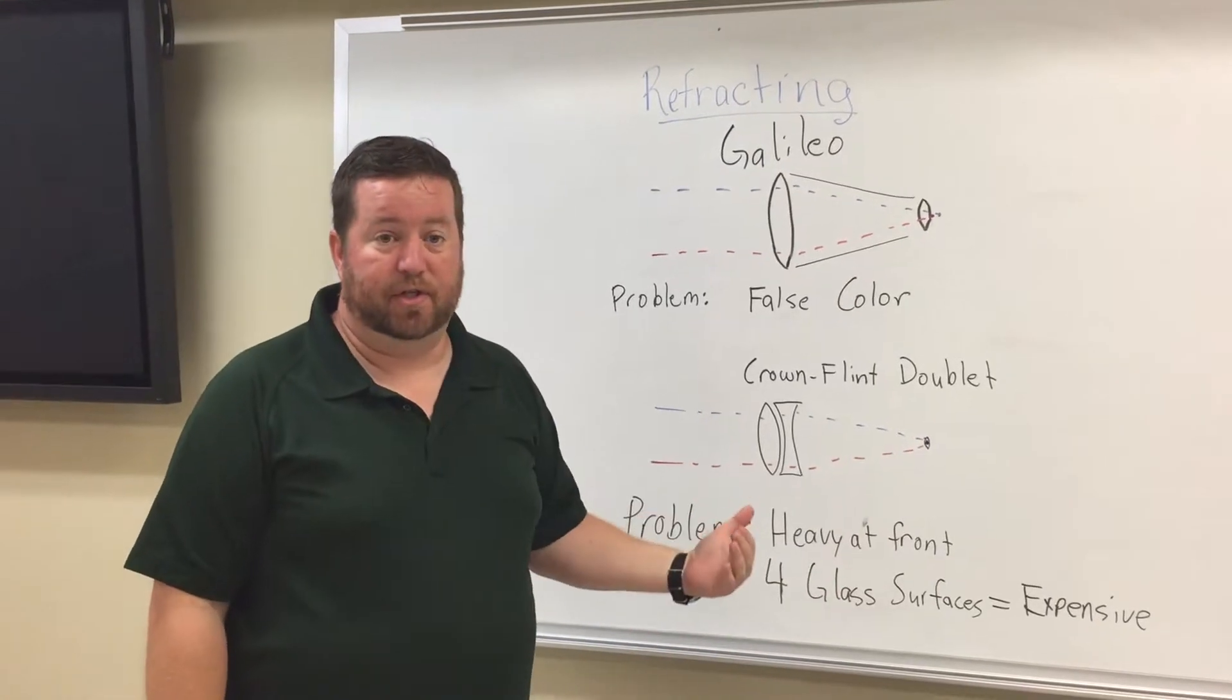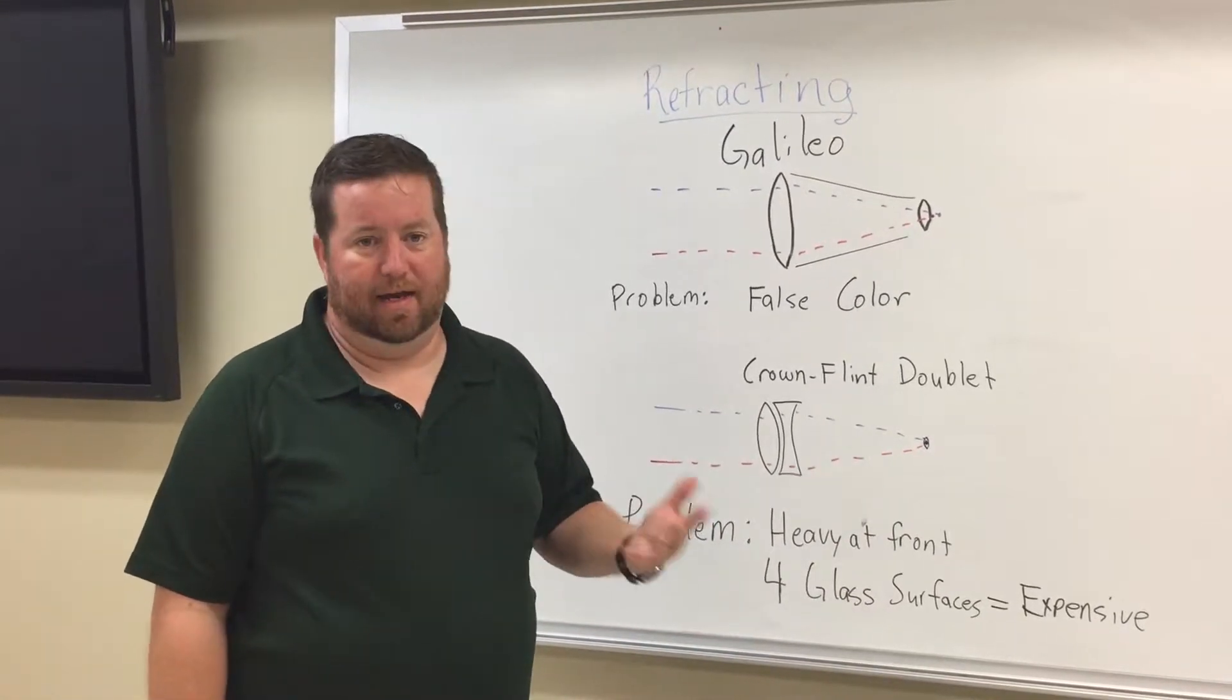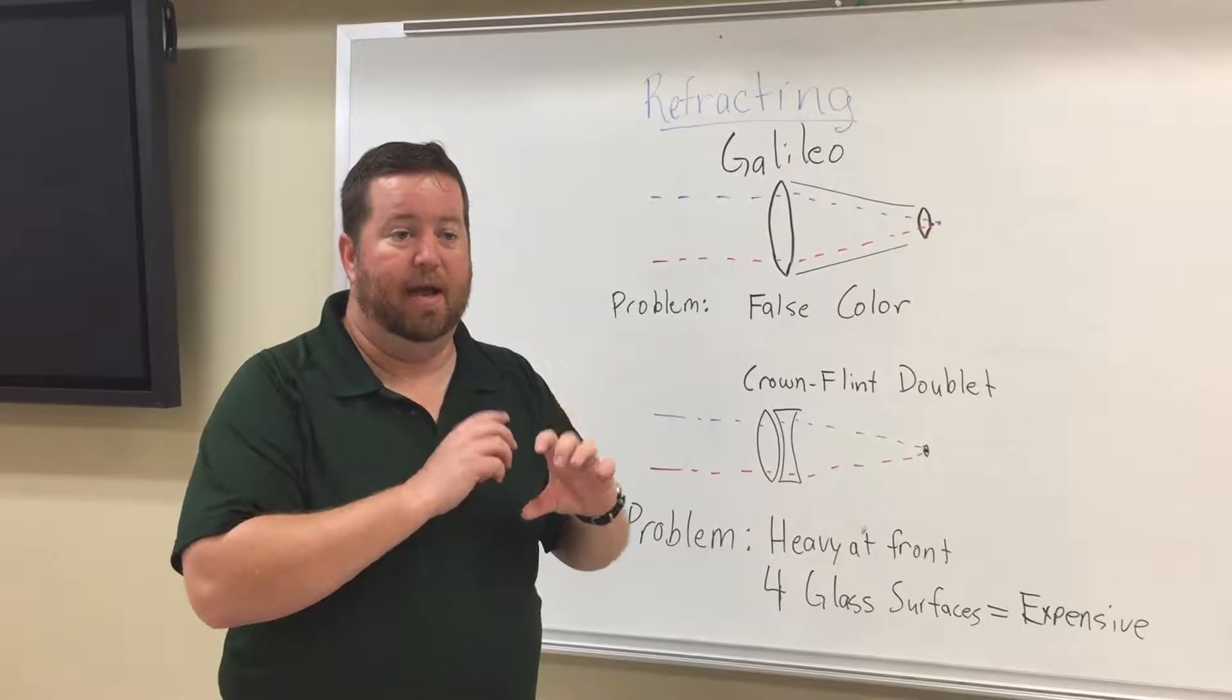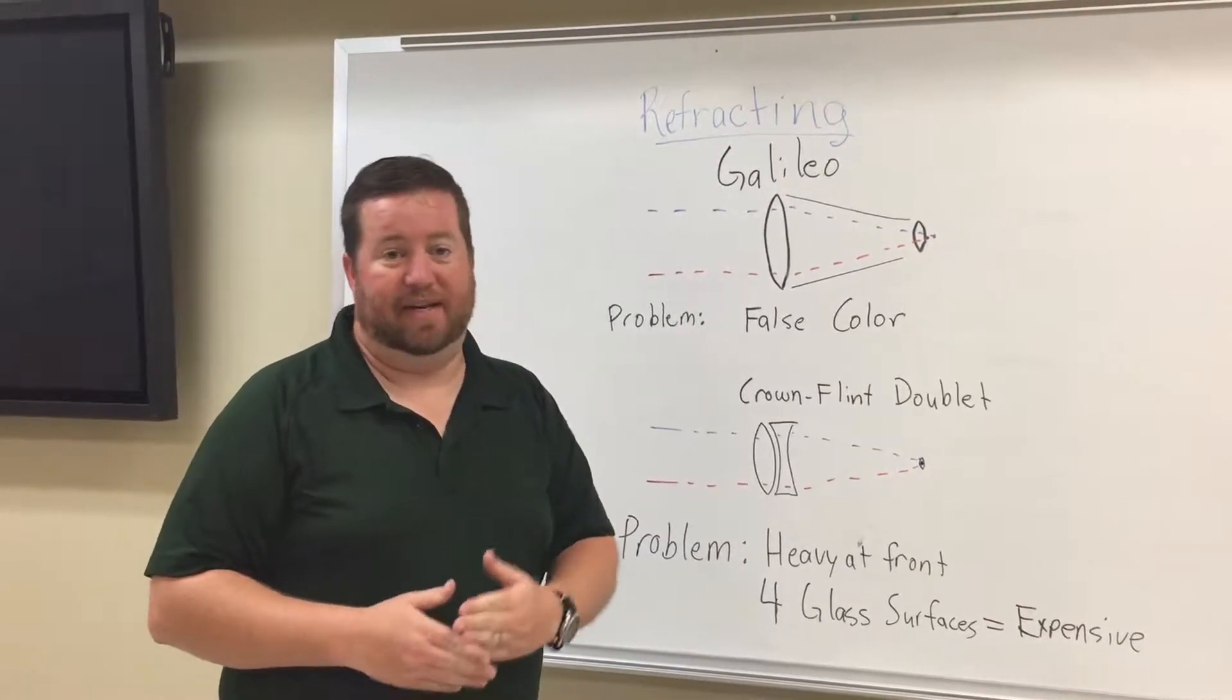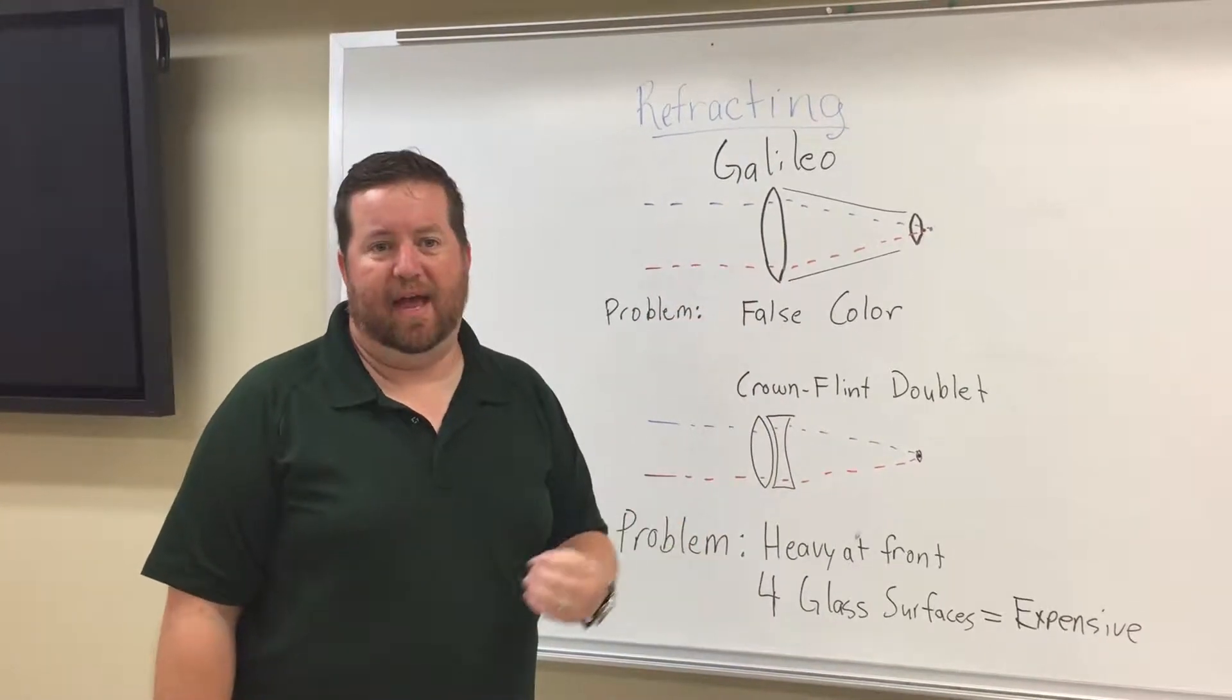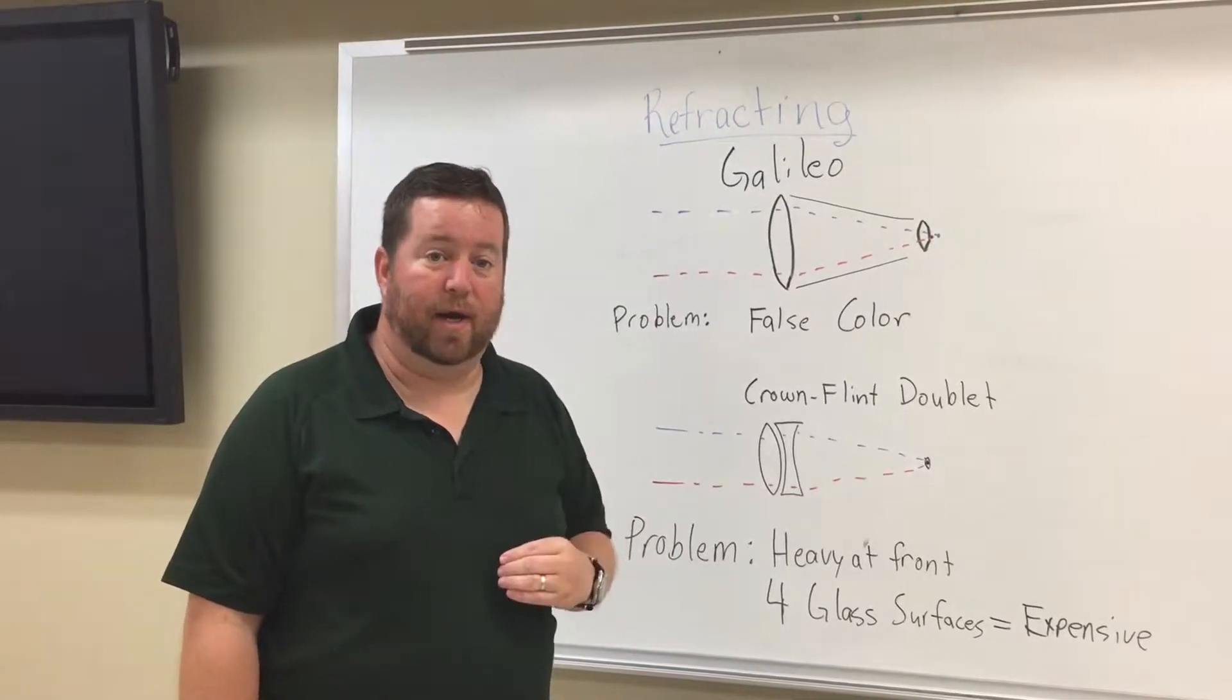This was first used in spy glasses invented by a Dutchman, but Galileo was the first one to turn the spy glass towards the heaven and look at things like the moon, the moons of Jupiter, the phases of Venus, sunspots, etc. And he was able to show that the heavens were not as perfect as they thought by seeing things like craters on the moon.